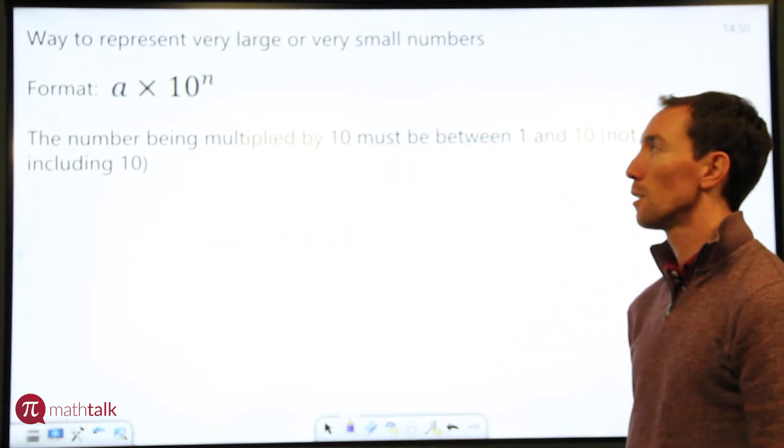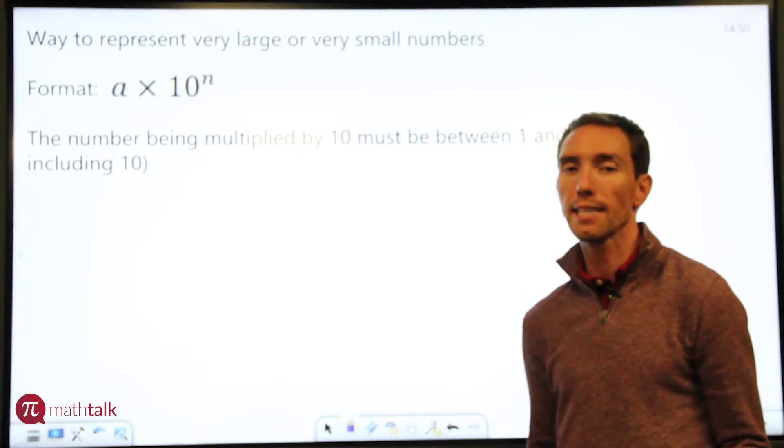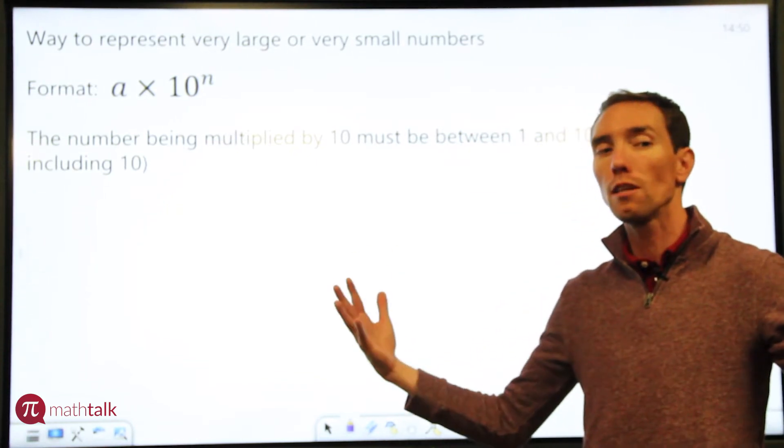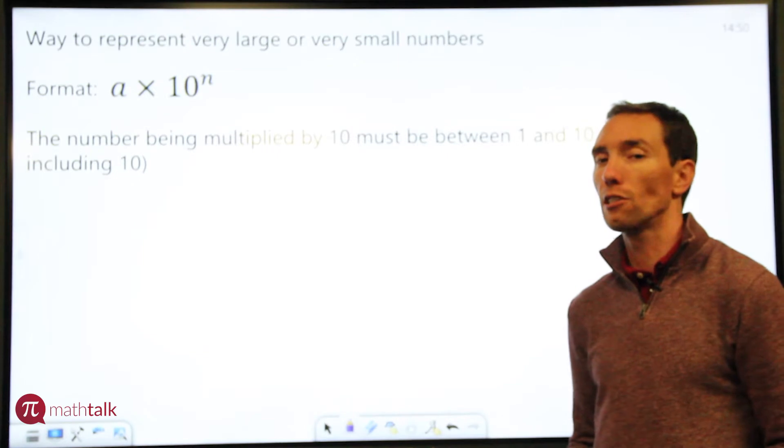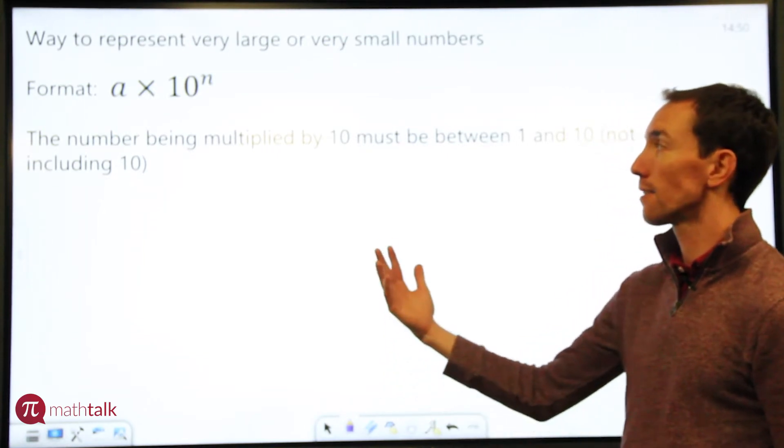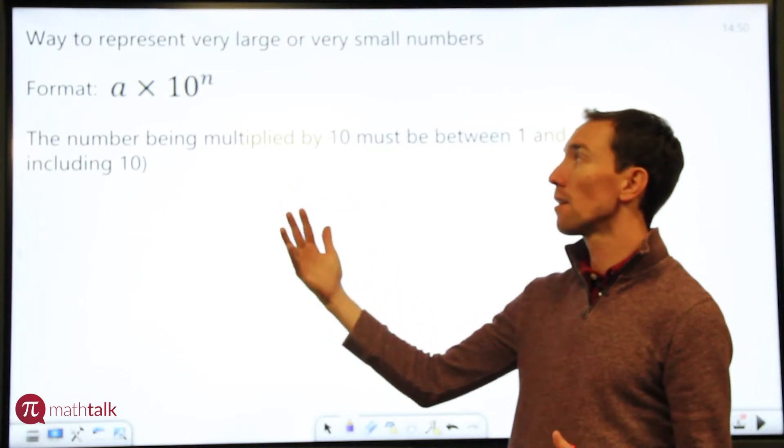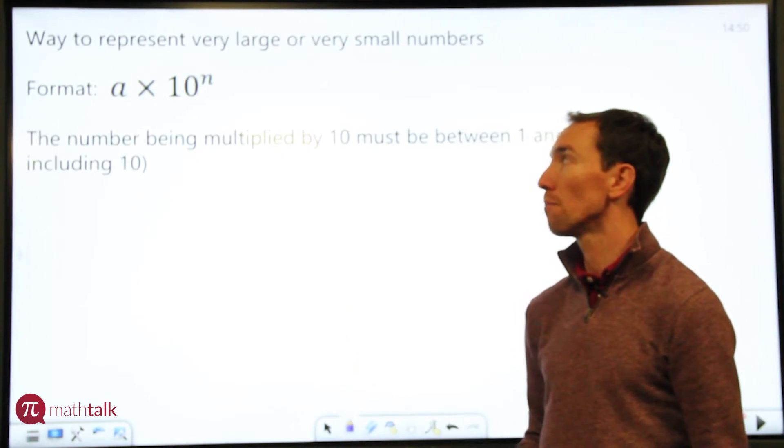So some information for you about scientific notation. Basically it's a way to represent very large numbers or very small numbers using a specific format. And that format is, let's say a, which is some number, times 10 raised to a certain power.